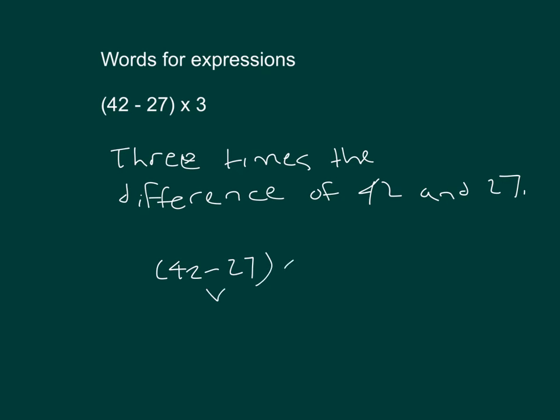By showing our work. 42 minus 27 is going to be 15. And 15 tripled is 45.